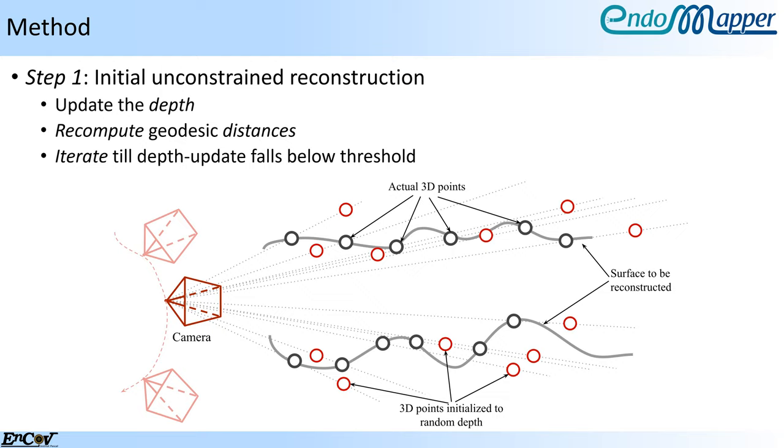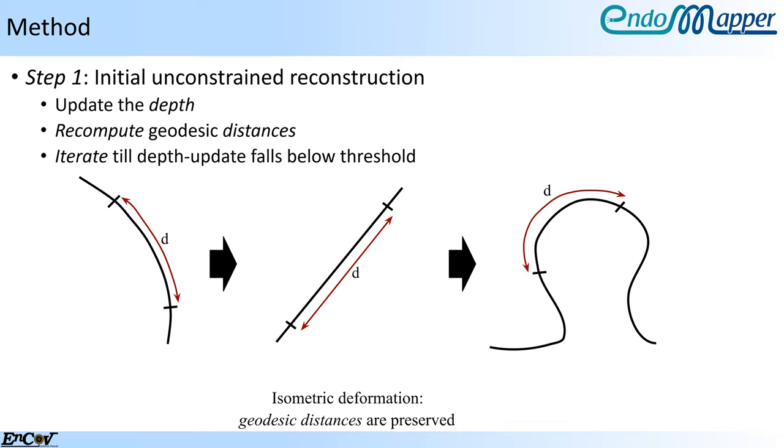Intuitively, this method utilizes the geodesic distance as the constraint for obtaining the maximum depth of the 3D points following the maximum depth heuristic. This is because for an isometrically deforming surface, the distance between points along the surface remains preserved, irrespective of the deformation.